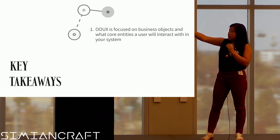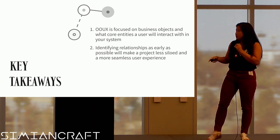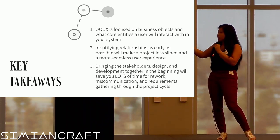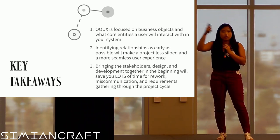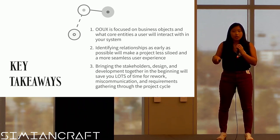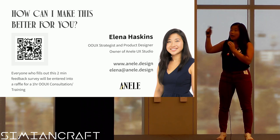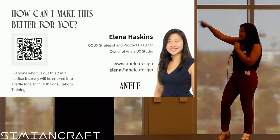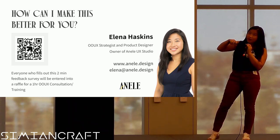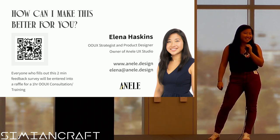Key takeaways: we are focusing on business objects — what is in your system? What are the relationships? Identify them as early as possible so it's less siloed and more seamless. And then let's bring everyone together — stakeholders, design, development — in the beginning, to save you time from rework, miscommunication, and just going through the motions. You are still iterative, still getting that feedback loop, but you're just getting more information in the beginning so it's hopefully a shorter period of time. So thank you so much. I would ask everyone if you want to scan this to give me some feedback, and I'd love to hear your thoughts on OOUX. Anyone who does it will be entered into a raffle for a free consultation with you or your team to go through how this process goes. Thank you so much for listening.